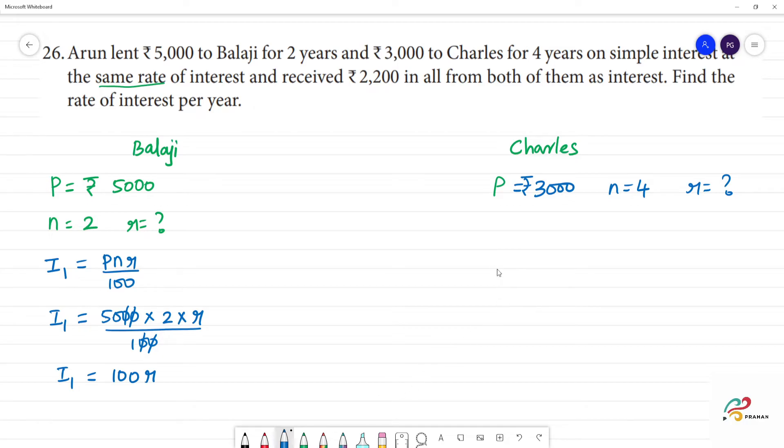So now we can calculate I2. I2 is equal to PNR by 100. Principal amount is 3000, n is 4, R we don't know, by 100. Cancel the zeros. So 3 times 4 is 12, that is 120R.